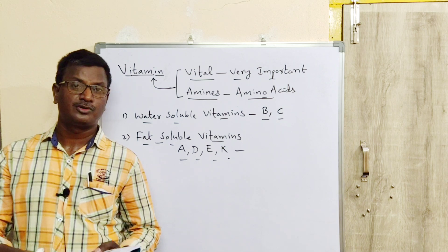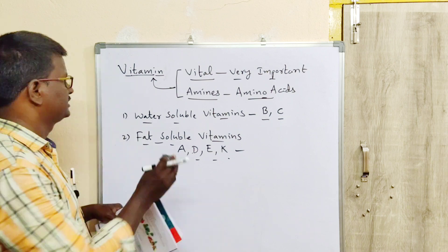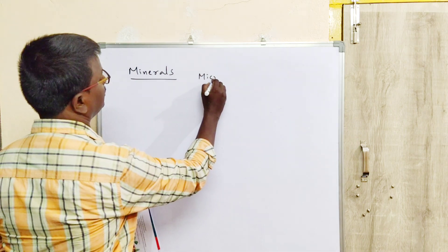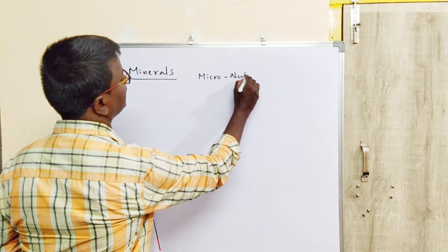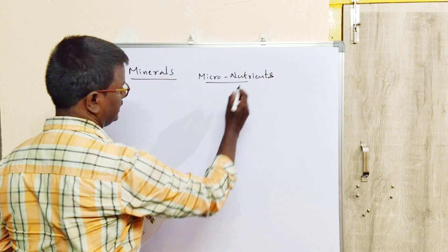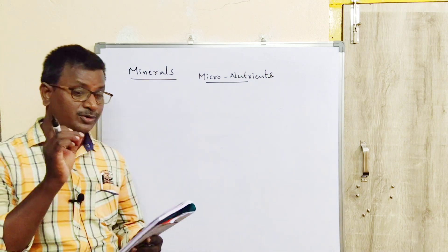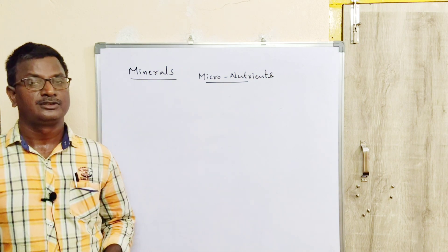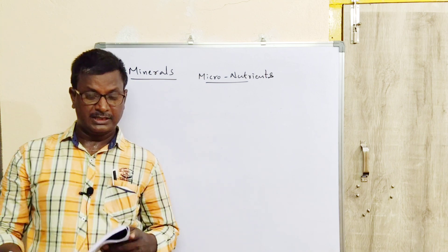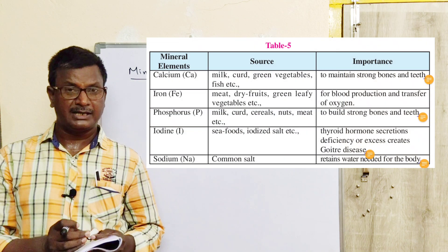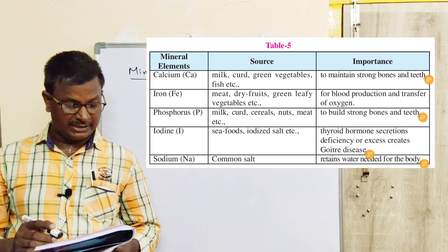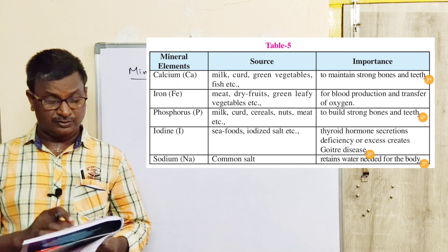Next, we will discuss about minerals. Minerals are also micronutrients because we take minerals in micrograms — very small amounts. The minerals given in our textbook are: calcium, iron, phosphorus, iodine, and sodium.